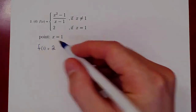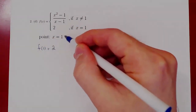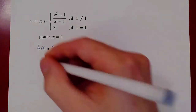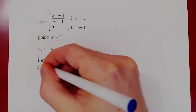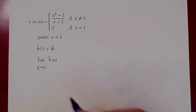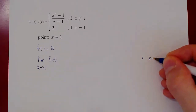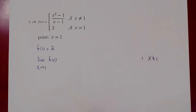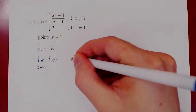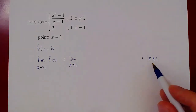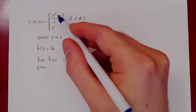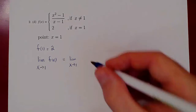Then the question is: what happens to f(x) when x is around 1 but not exactly equal to 1? That is the question of the limit of f(x) as x approaches 1. Remember, if x approaches 1, that means x is taking values closer and closer to 1, but never exactly equal to 1. So what is f(x) when x is close to 1 but not exactly 1? Well, when x is not exactly 1, f(x) is (x² - 1) / (x - 1).